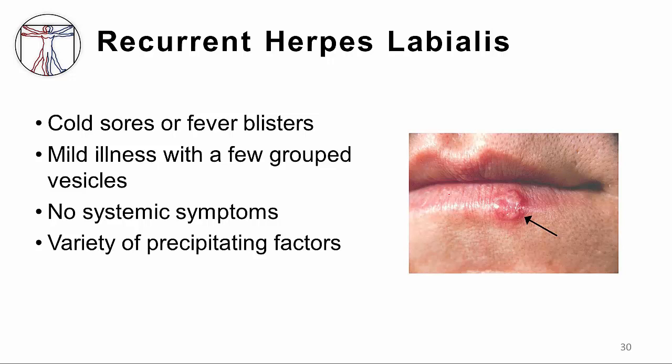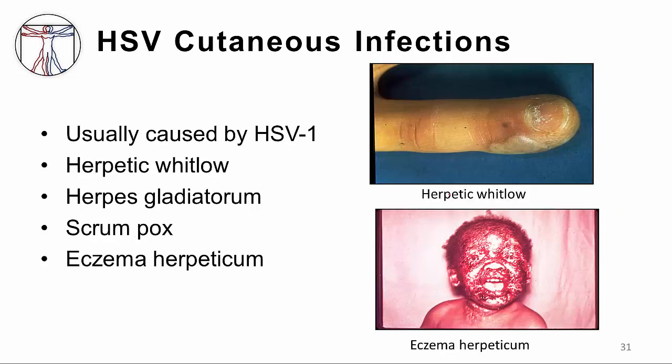There are a few grouped vesicles on the lips, as shown in the picture, or perhaps in other areas around the mouth. The patient does not feel particularly sick. There are a number of precipitating factors that cause the infection to erupt in some individuals more than others, such as sun and stress.